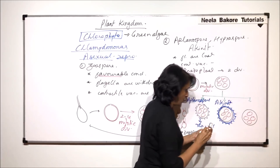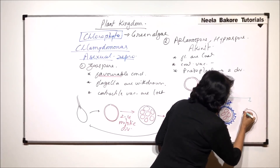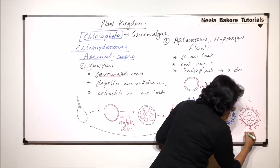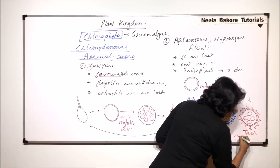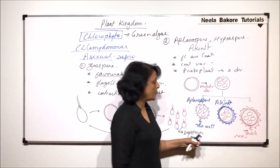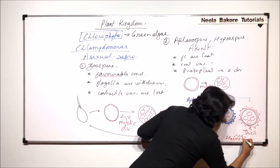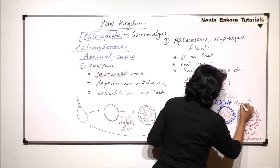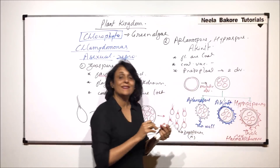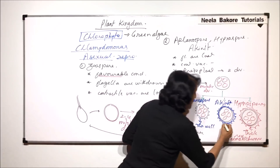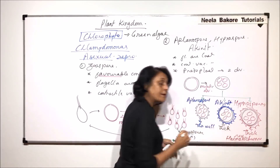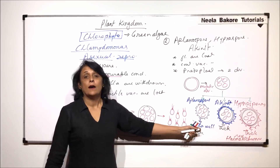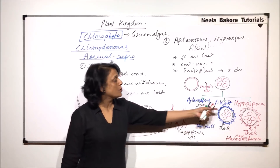These are the four hypnospores which are going to be produced. There is a thick layer deposited outside, and this thick layer is red. It is red due to the presence of hematochrome. Such spores are known as hypnospores. So to summarize: there can be a thin wall — that gives aplanospores; a thick wall which is not red gives akinetes; and if the wall is red due to presence of hematochrome, then the spore is known as hypnospore.